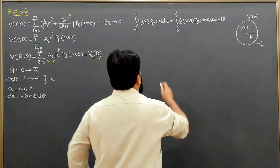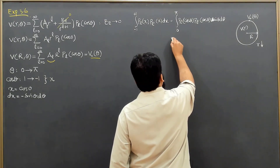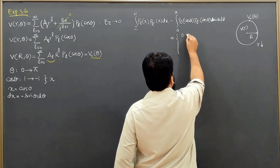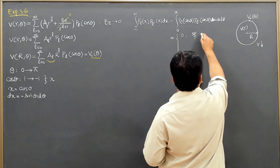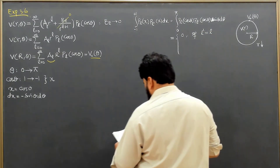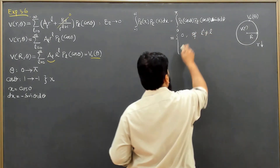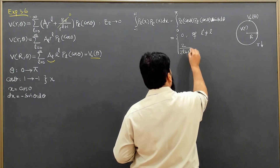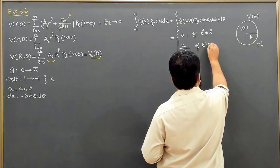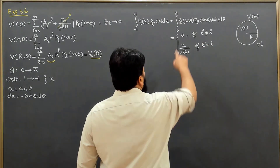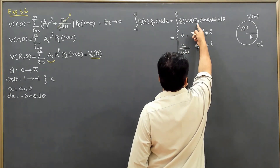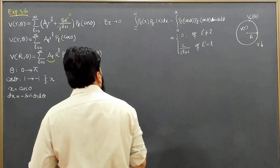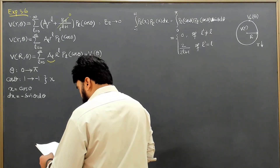By the Kronecker delta identity, this orthogonality integral equals 0 when L ≠ L′, and equals 2/(2L+1) when L = L′. So the integral from 0 to π of P_L(cosθ)·P_L(cosθ)·sinθ dθ equals 2/(2L+1).